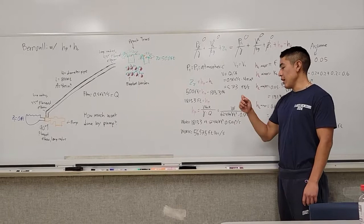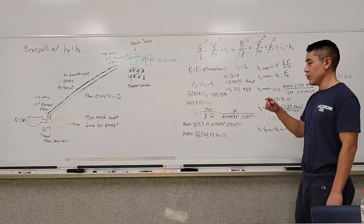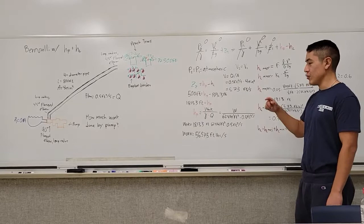We use the equation for head pump to solve for work. We plug in our unknowns, and we solve, and we get a total of 56,575 foot-pounds per second for our pump.